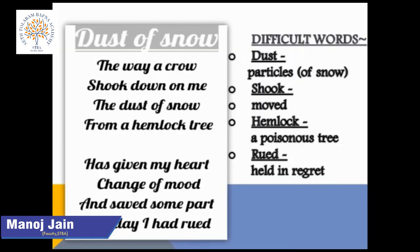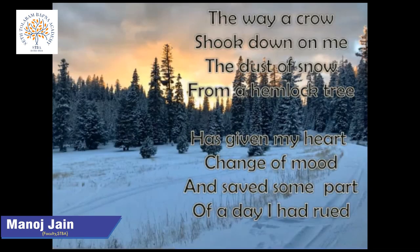Now let us read the poem, Dust of Snow: 'The way a crow shook down on me the dust of snow from a hemlock tree has given my heart a change of mood and saved some part of a day I had rued.' The theme of the poem is that we are always surrounded by negativities, but if we are persistent and stay calm, something small but wonderful can happen in our lives. These small things can transform our sorrow or pensive mood into a joyful mood.